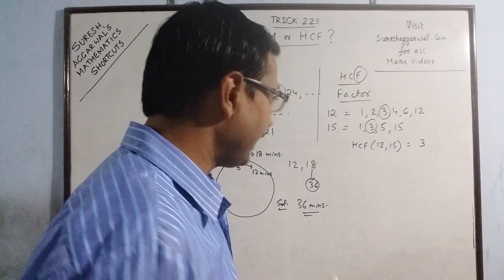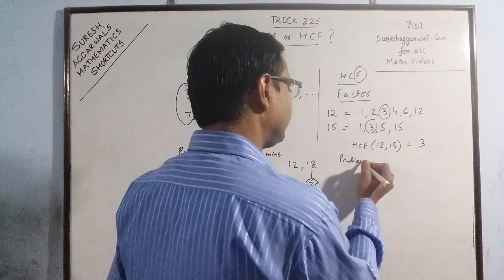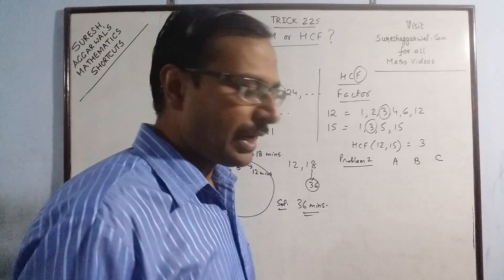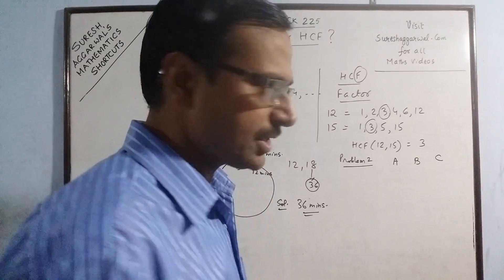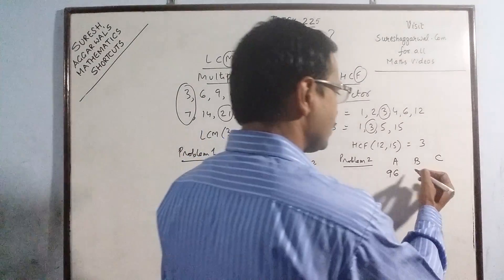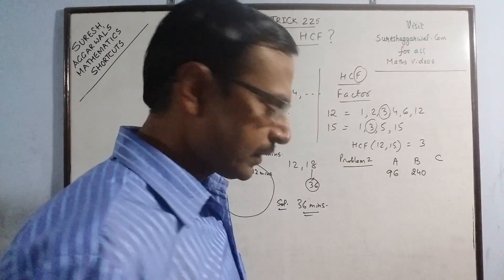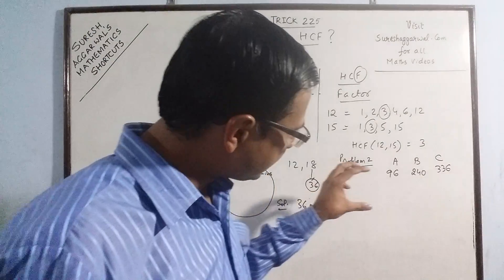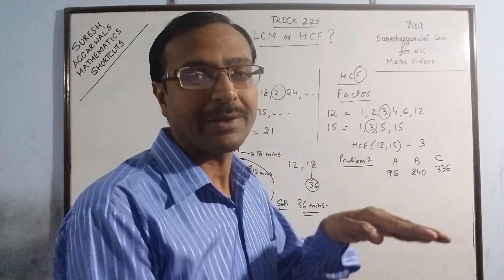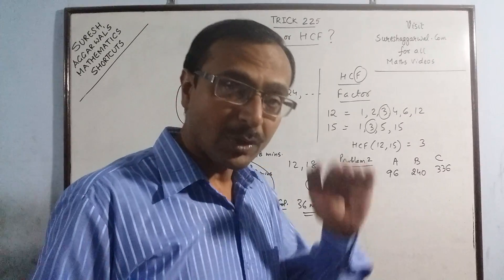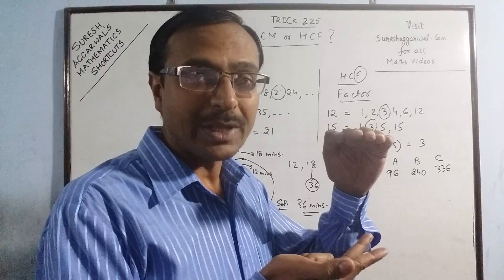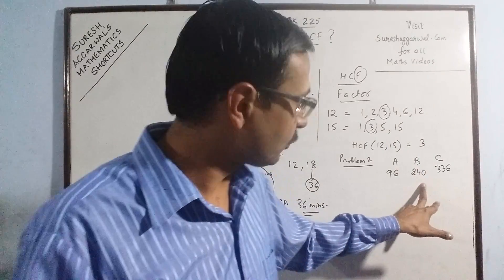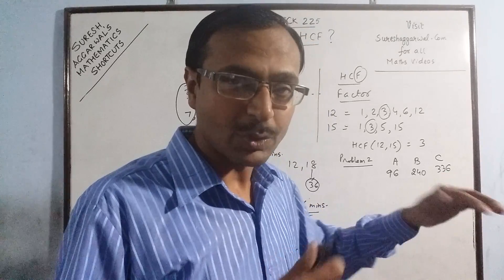Now one problem involving the concept of HCF — Problem 2. Suppose there are three subject books: Subject A, Subject B, and Subject C, with separate numbers of books for each subject. There are 96 books of Subject A, 240 books of Subject B, and 336 books of Subject C. We need to arrange these books in stacks where one stack contains only one subject's books, and the same number of books must be in each stack across all three subjects.